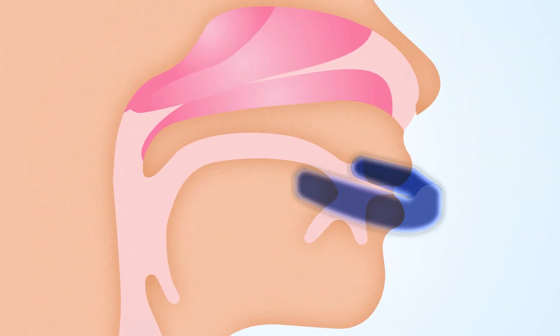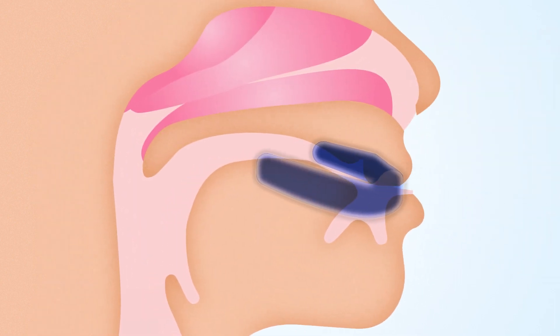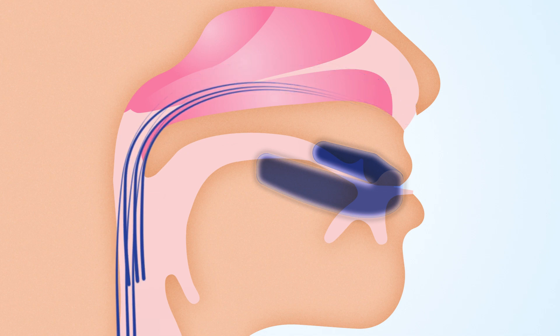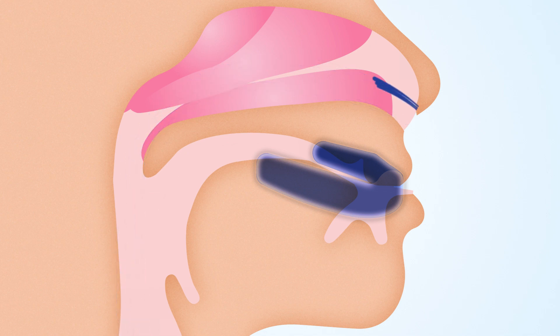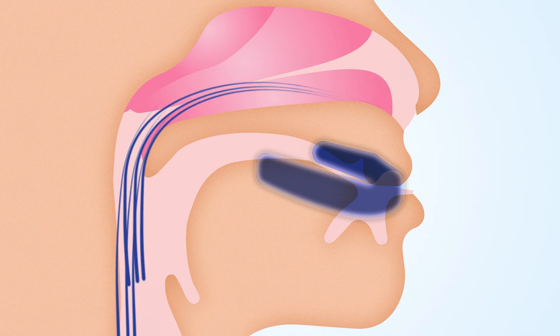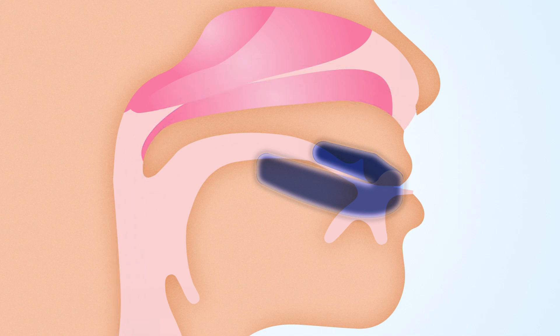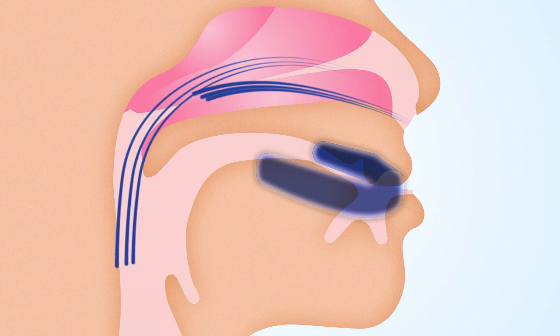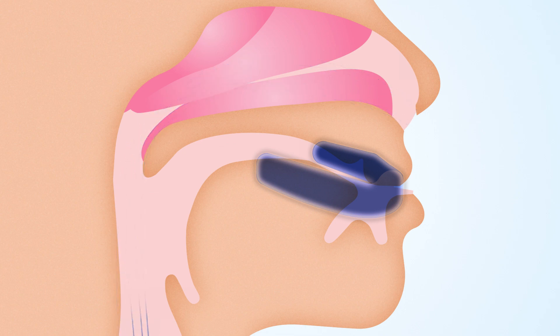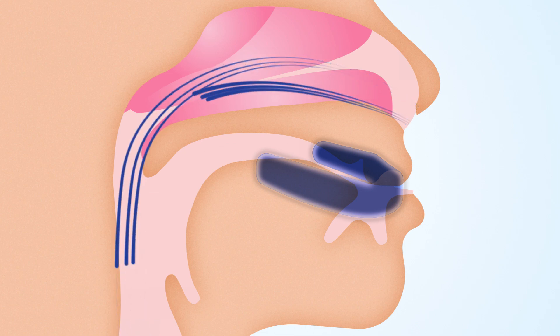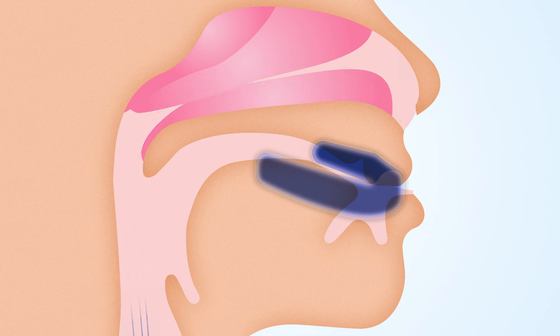In some cases, the addition of an oral appliance may also be needed to assist in holding the mouth closed and moving the jaw slightly forward to shift an oversized tongue away from the back of the throat.